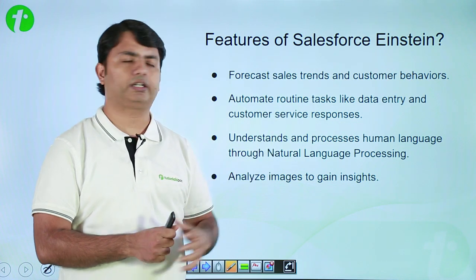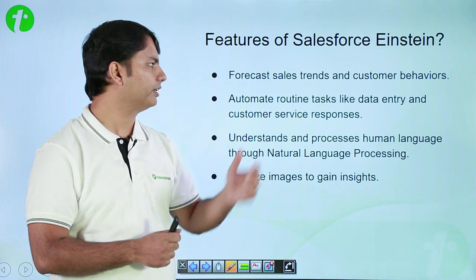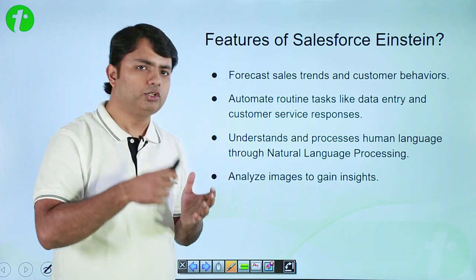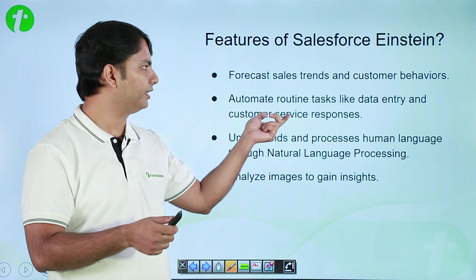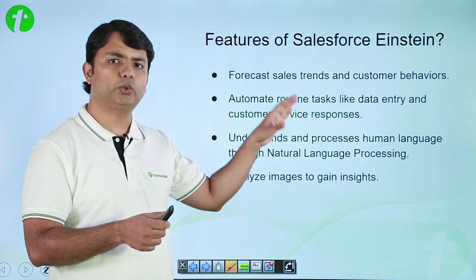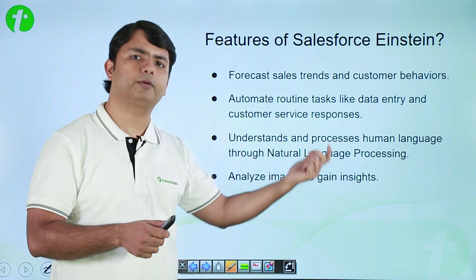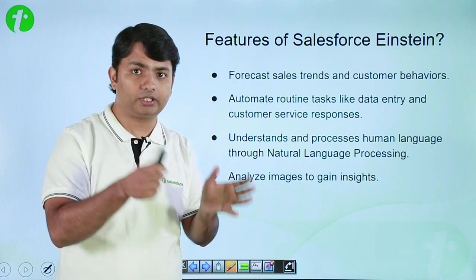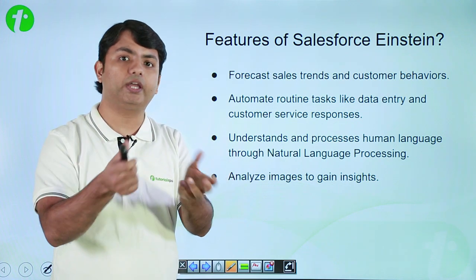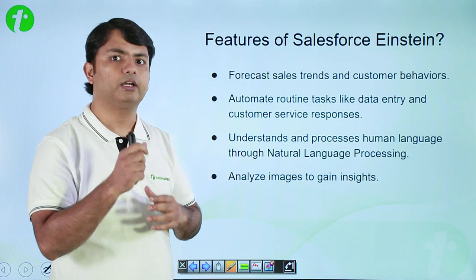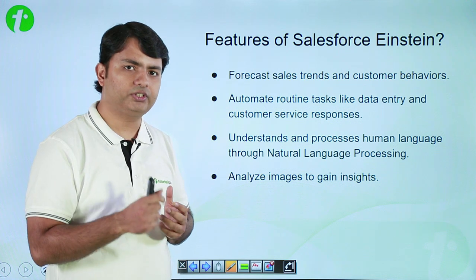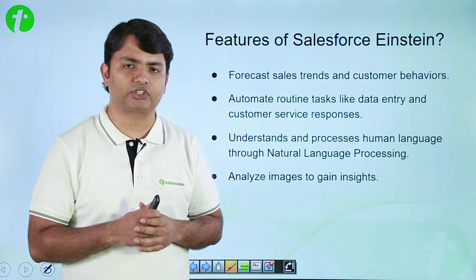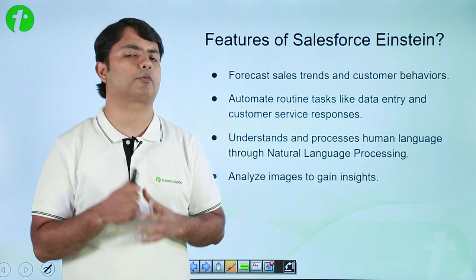Einstein can automate routine tasks like data entry and customer responses. When working with Einstein, you can automate regular processes so that you can focus on the main jobs to be done, making your system more efficient and more productive.